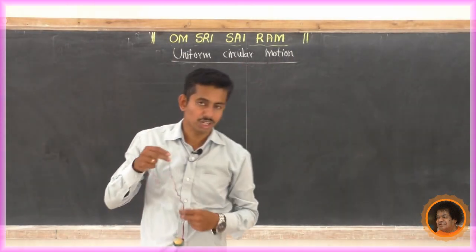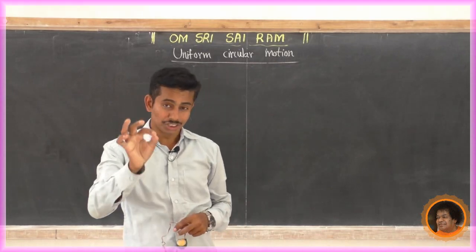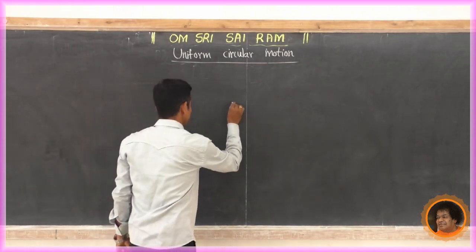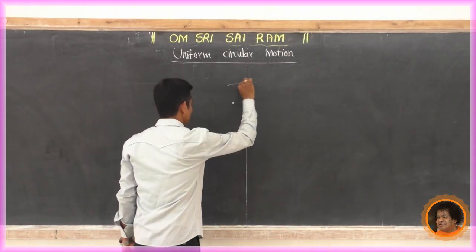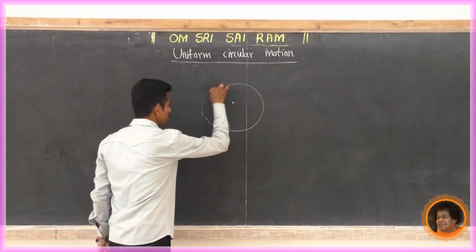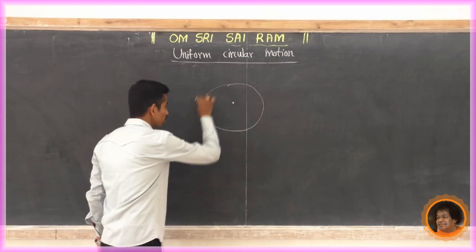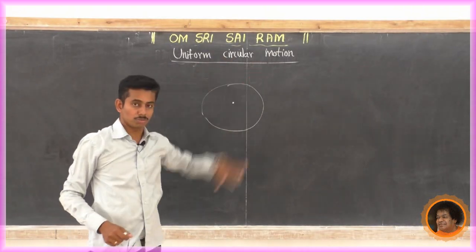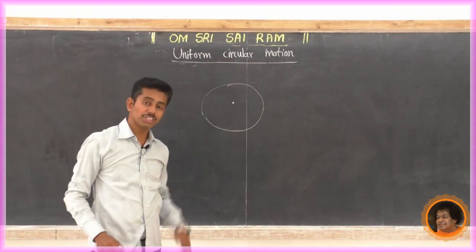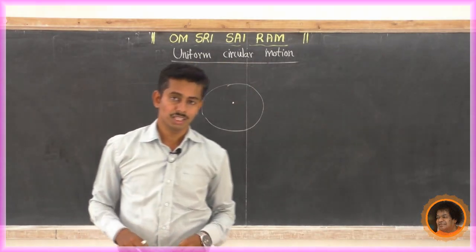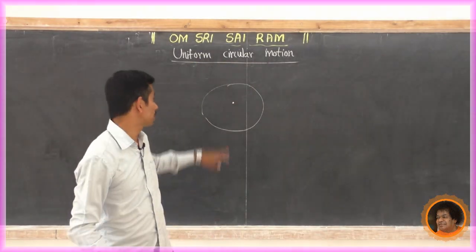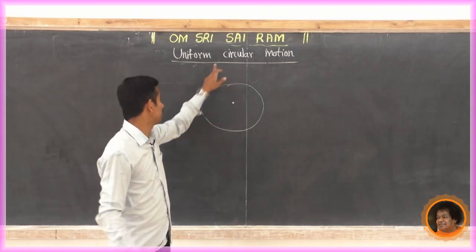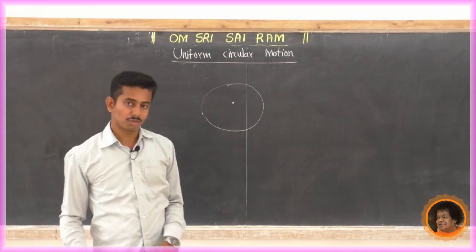What is circular motion? A body or object which moves along a circular path — that is called circular motion. But that is not Uniform Circular Motion. When we say Uniform Circular Motion, 'uniform' means the object moves along a circular path with constant speed. Then it is called Uniform Circular Motion.